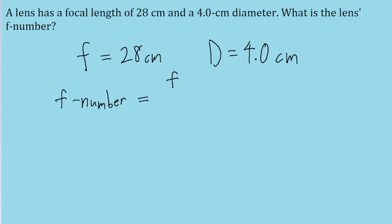So what we've got to do is take the focal length given to us and divide by the lens's diameter. So f over D: 28 centimeters divided by 4 centimeters. If you put that into a calculator, we find an f-number of 7.0.